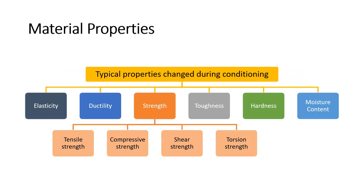When we talk about the properties we're trying to change or manipulate in a conditioning process, we're looking at the six categories of material properties: elasticity, ductility, strength, toughness, and hardness. We're also going to talk a little bit about moisture content — we don't usually discuss that with metals, but when you're talking about wood, think about dried lumber versus fresh green lumber versus lumber that's been treated for outdoor use like decking. That is lumber altered through a conditioning process where moisture content is controlled.